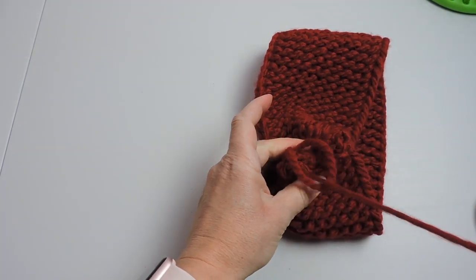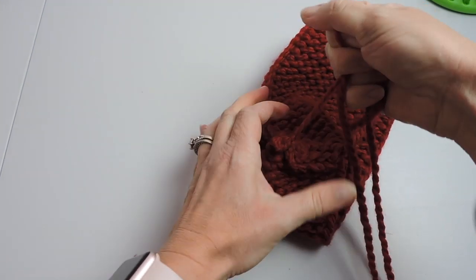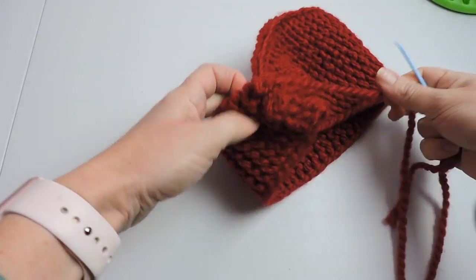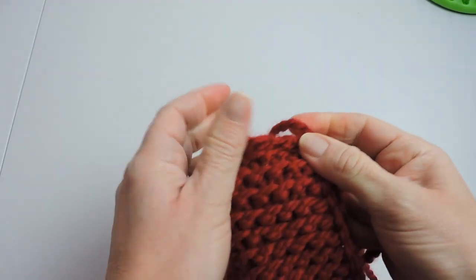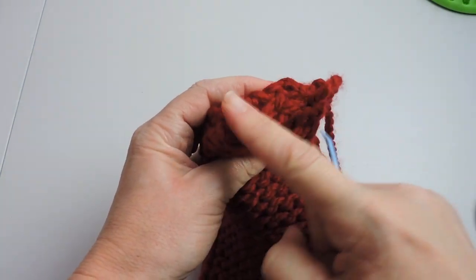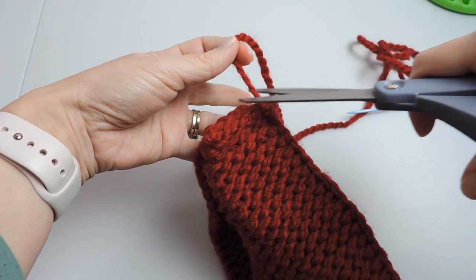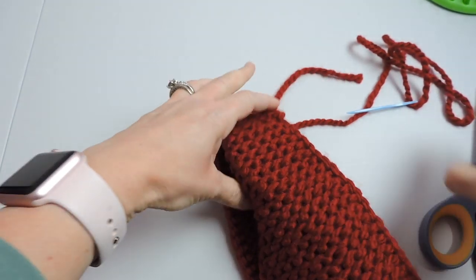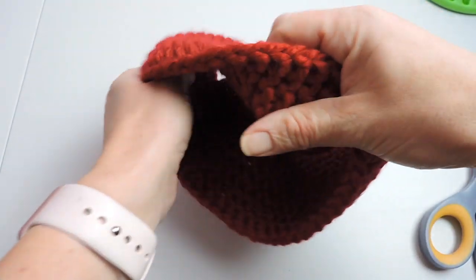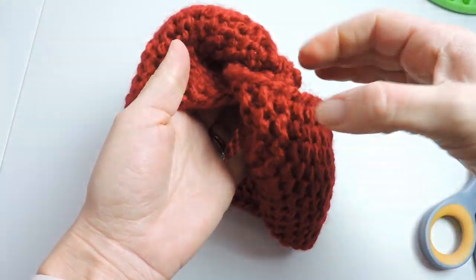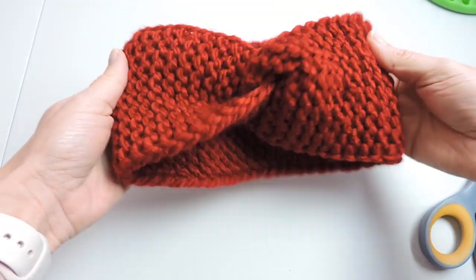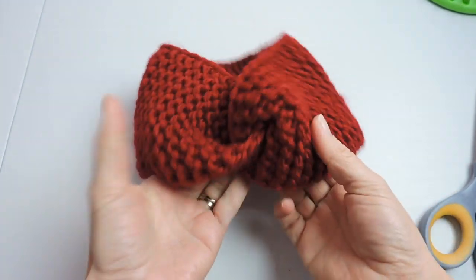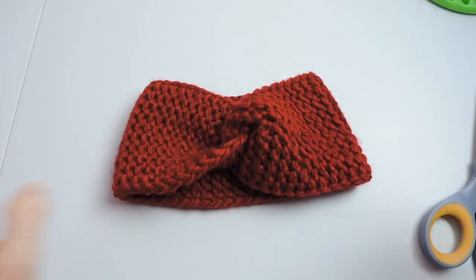So now I'm just going to knot it. And pull it tight. Make sure it's secure. And see everything looks secure and in place. So I am just going to give that a cut. Not too close. Okay. Then we're going to just take the ear warmer. And place it on the opposite side. So now the pretty side. The red side is showing. And as you can see it has a cute little twist in the front. And you are all done with your project. Ready to keep yourself or somebody else's head warm in this cold cold weather.